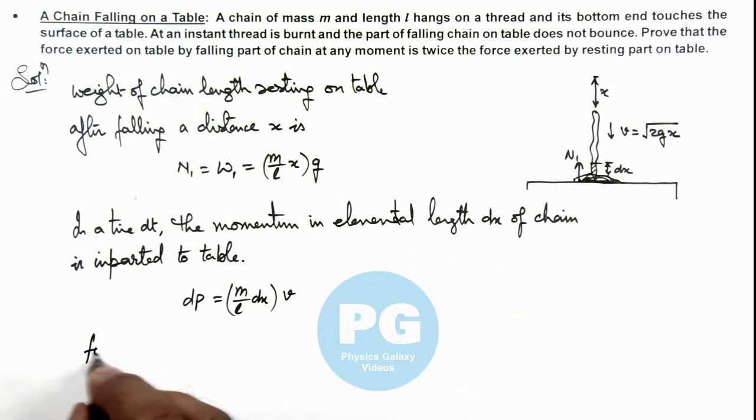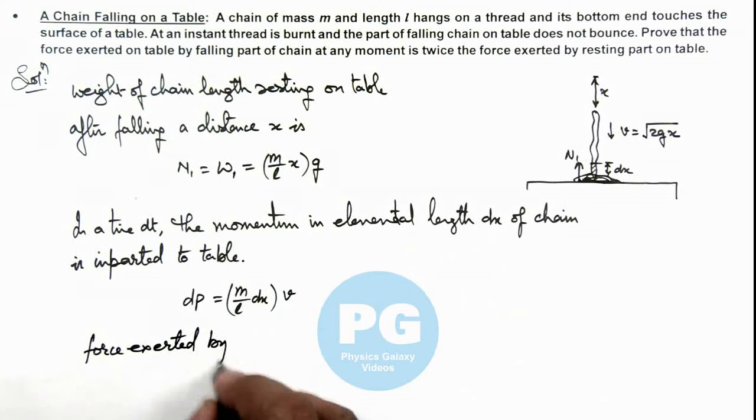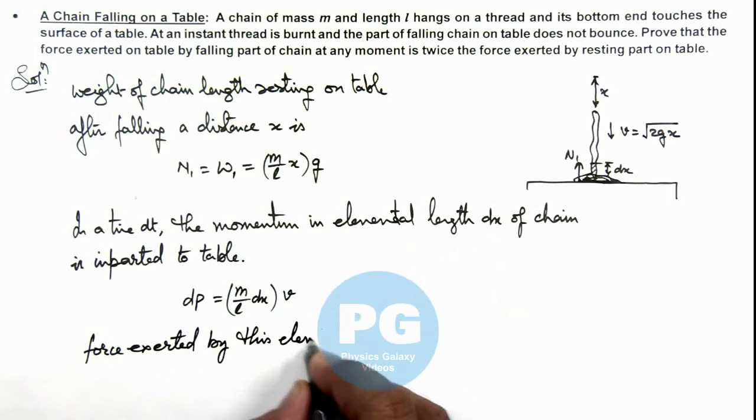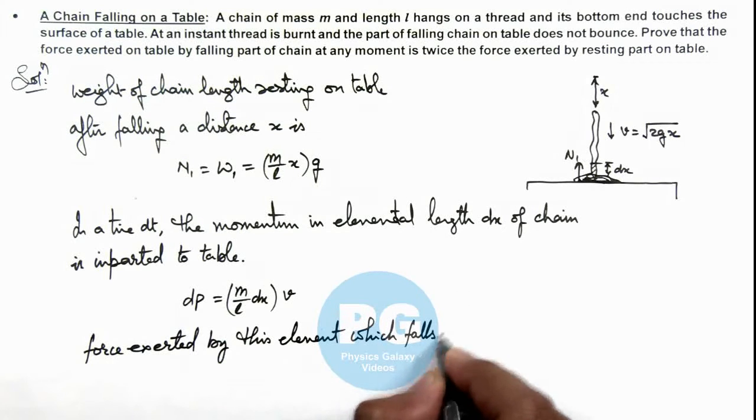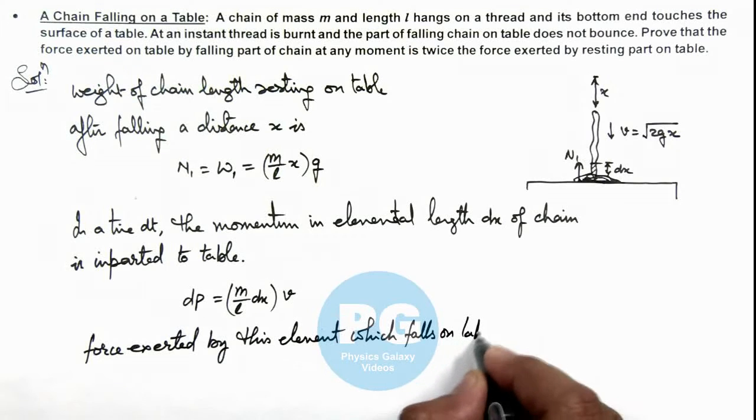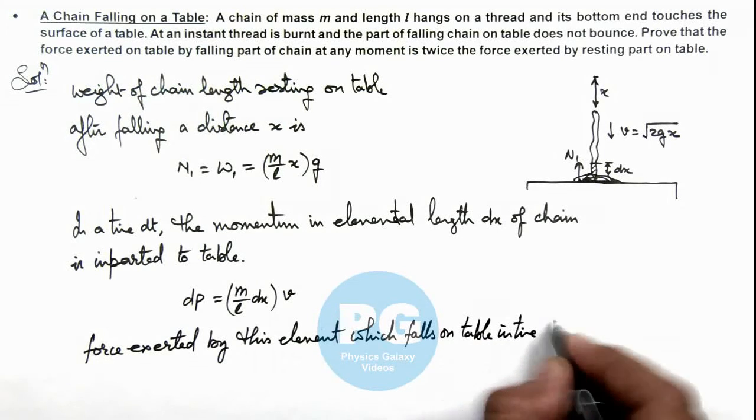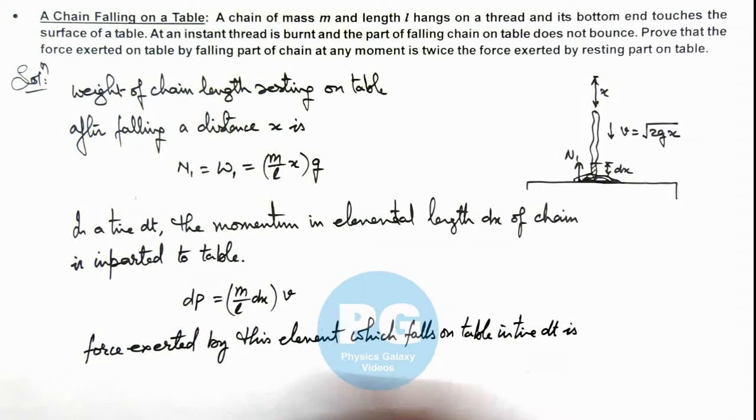So we can write the force exerted by this element which falls on table in time dt is. This force can be written as dp/dt, as in time dt it imparts a momentum dp. So this can be written as m·v/l multiplied by dx/dt, which can be written as m·v²/l.